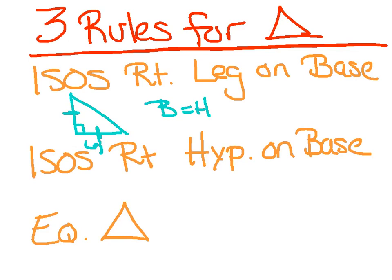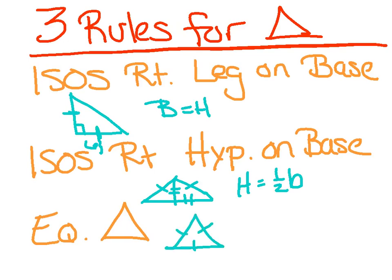For an isosceles right triangle whose hypotenuse is on the base — draw it out. The hypotenuse is on the base, these two sides are equal, and the height is half the base. When I do that, I'm creating two equal angles, that's why the height is half the base. And then the equilateral triangle, where all three sides are equal — the height is radical 3 over 2 times the base. If you forget, draw out your 30-60-90 triangle to help you.